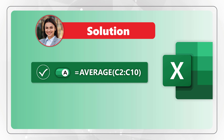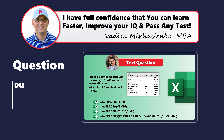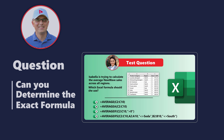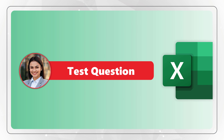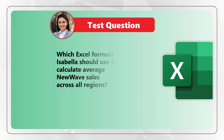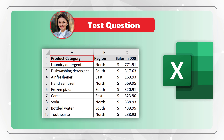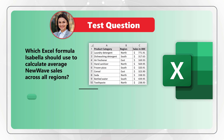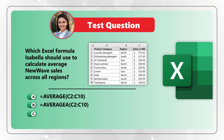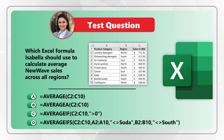Did this question trigger some thoughts or considerations? Please share in comments so we can all learn. Here's a practice question for you: which Excel formula should Isabella use to calculate average new wave sales across all regions? You are presented with a data set containing product category, region, and sales in thousands, and four possible choices A, B, C, and D. Please post your answer and solution in comments so I can give you feedback. Thanks for participating and good luck!